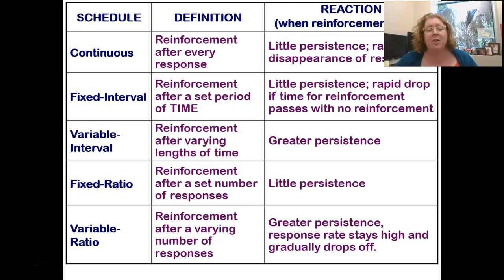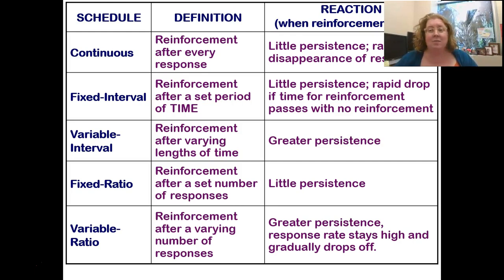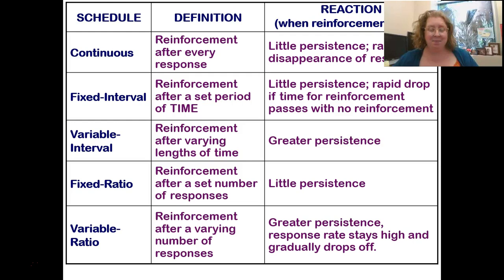Fixed ratio means I give a reinforcement after a set number of responses — for example, after every five correct answers you get a piece of candy. What happens is that once I stop giving the candy, you stop answering. Variable ratio means sometimes I give it after one answer, sometimes five, sometimes ten — the response rate stays high over a longer period of time. This is what gambling is like: sometimes you get rewards, sometimes you don't, and you don't know when that reward is coming, which keeps people coming back to the slot machine. There's a nice discussion of this in the Watson video on Canvas.